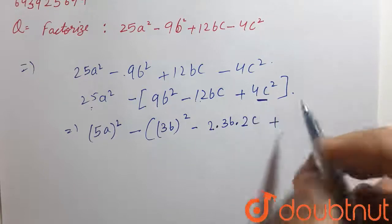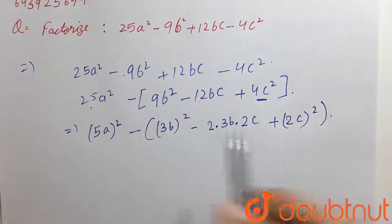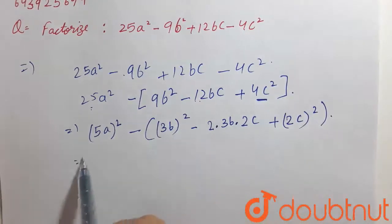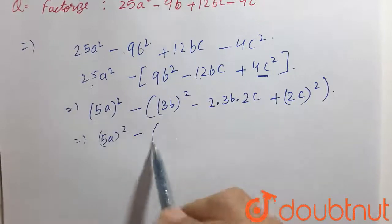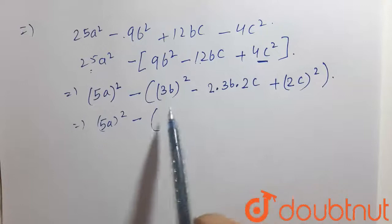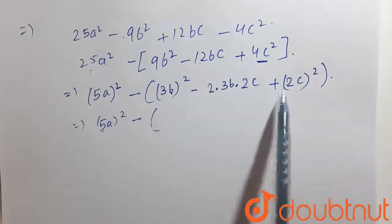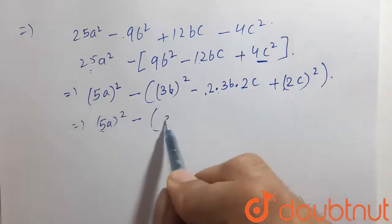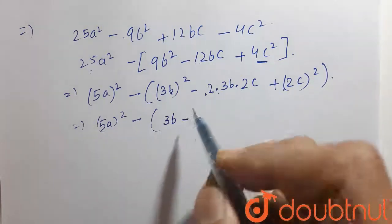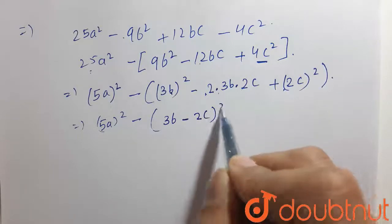And also, it can be written as 2c whole square. So, here it can be written as 5a whole square minus. Here, we can see that a square plus b square minus 2ab. So, this becomes 3b minus 2c whole square.